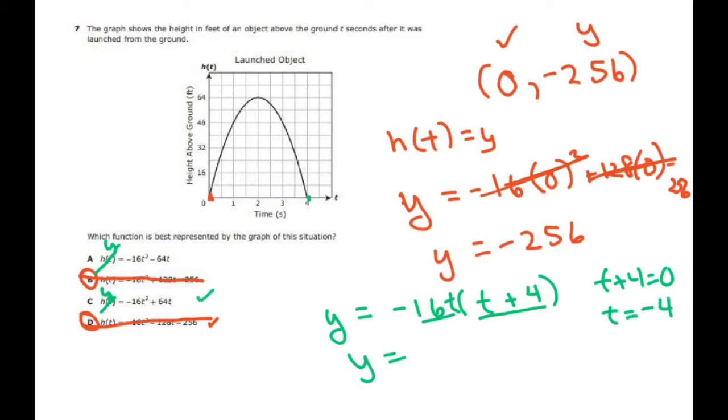And if you factor out this one, you're going to get y equals negative 16t times t minus four. If you set this piece to zero, that means setting your y to zero, you're going to get t equals four. So in this case our answer is C.